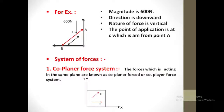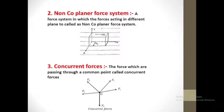For example: magnitude is 600 Newton, direction is downward, nature of force is vertical, and the point of application is point C which is 2 meters from point A. System of forces — coplanar force system: forces acting in the same plane are known as a coplanar force system. Non-coplanar force system: forces acting in different planes are called a non-coplanar force system.